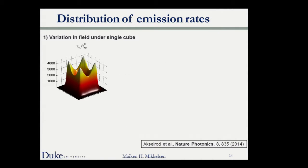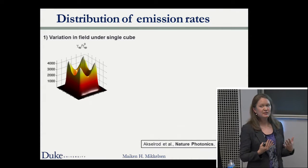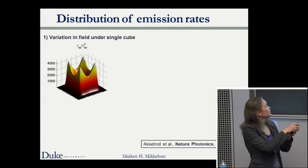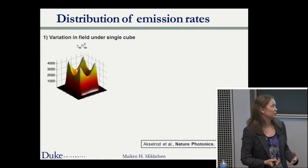Even though we have high field enhancement under the entire area under a cube, it's not homogeneous. Simulations of expected enhancement in spontaneous emission rate vs. glass show the highest enhancements near the corners of a cube. Since we are not looking at single molecules but sampling all positions, we expect to see a distribution of decay rates — which is really not surprising.